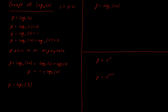Likewise, for y = log base 2 of (x/2), I can use log rules: dividing means subtracting logs, so it becomes log base 2 of x minus log base 2 of 2. Log base 2 of 2 is 1, so that gives y = log base 2 of x minus 1. The graph will shift downwards by 1.